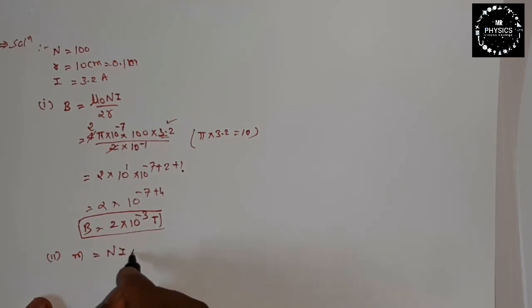The answer I got is 2 into 10 raise to minus 3 Tesla. Now in the second part, we should define that m is equal to dipole moment: m is equal to N I A, which is N I pi r squared.